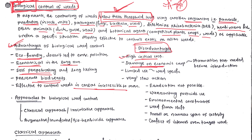Some bio-agents may affect the economic crop as well. Suppose we release an insect to control a certain weed — what is the guarantee it will not also affect the crop plant? For this, we need to perform a starvation test: we test whether, if the target weed is not present, the insect will attack any other crop. If it does not, it passes the starvation test.